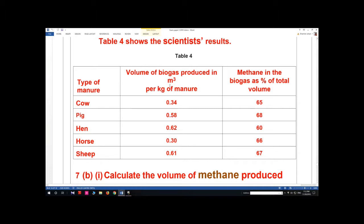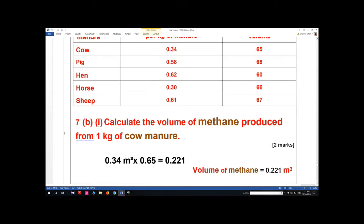The table also shows methane in the biogas as percentage of total volume. Calculate the volume of methane produced from one kilogram of cow manure. For cow manure: 0.34 m³ and 0.65.